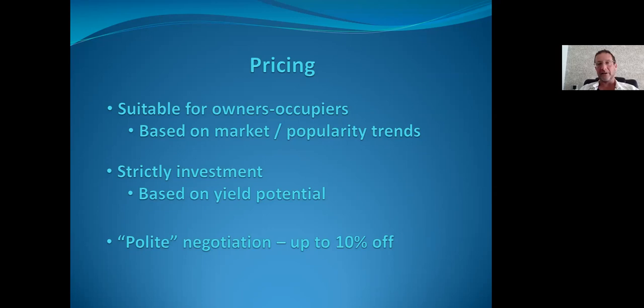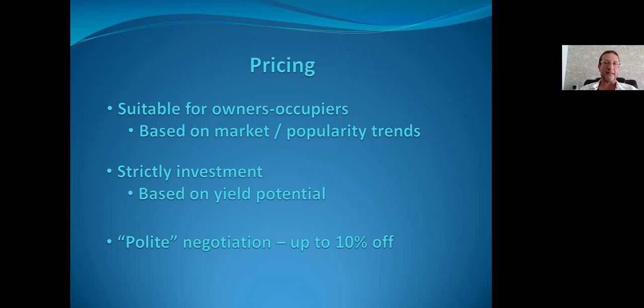In Japan, it's generally considered impolite to offer less than 10% below the asking price. Very low-ball offers may offend the seller, or the agent may not even present them, potentially labeling you a tire-kicker and damaging the relationship going forward. If you are keen on a property or have a good relationship with the realtor, have a conversation before submitting an offer below that 10% threshold, as it is considered quite unusual.